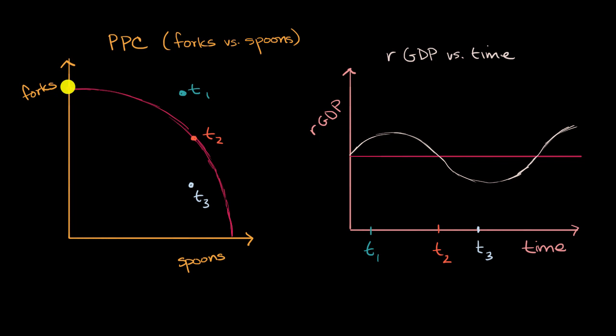So if it could produce all forks efficiently, it would be right here, that many forks. If it could produce all spoons efficiently, it would be right here. And all the combinations of forks and spoons that it would produce efficiently at its potential, well that's what defines this production possibilities curve.